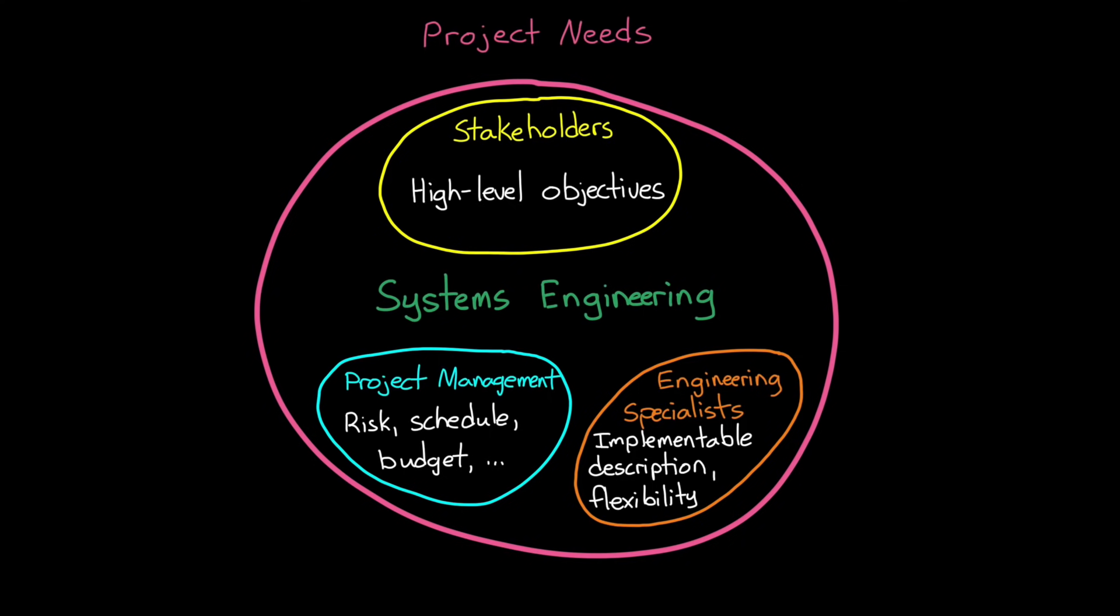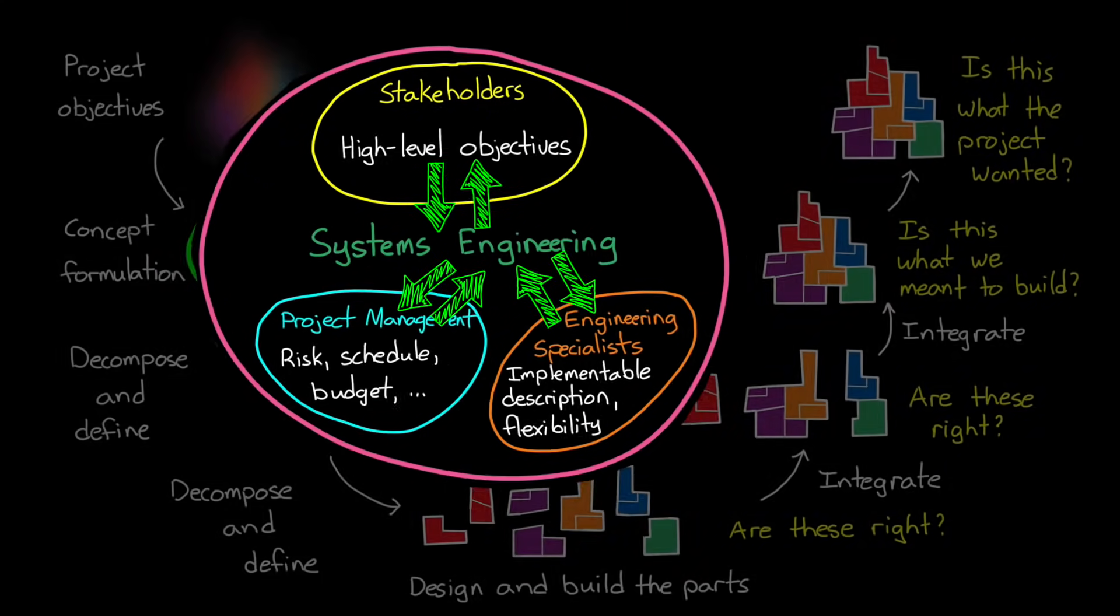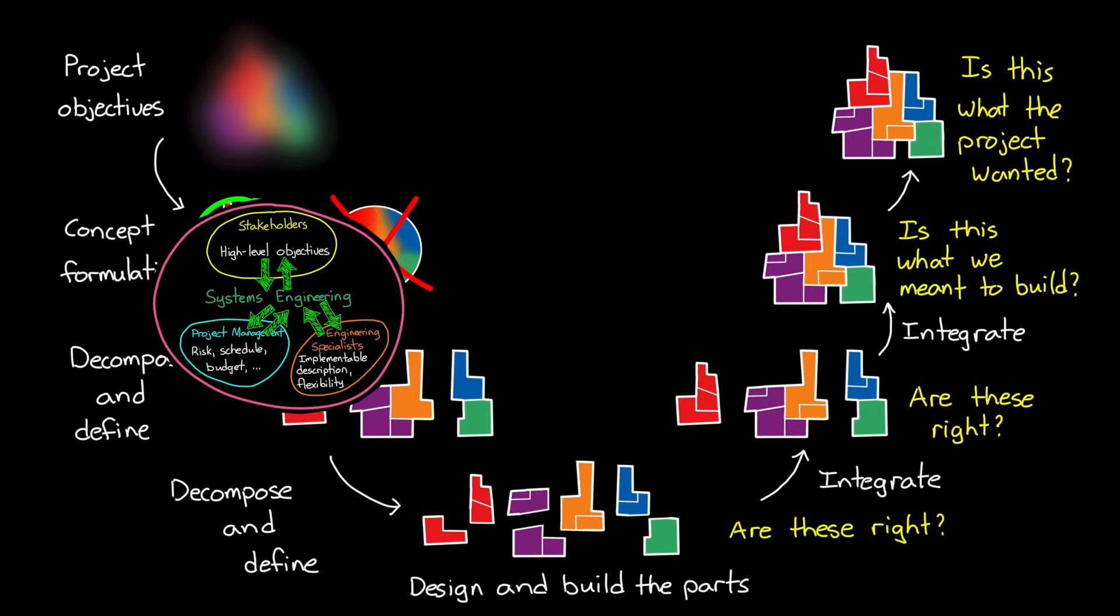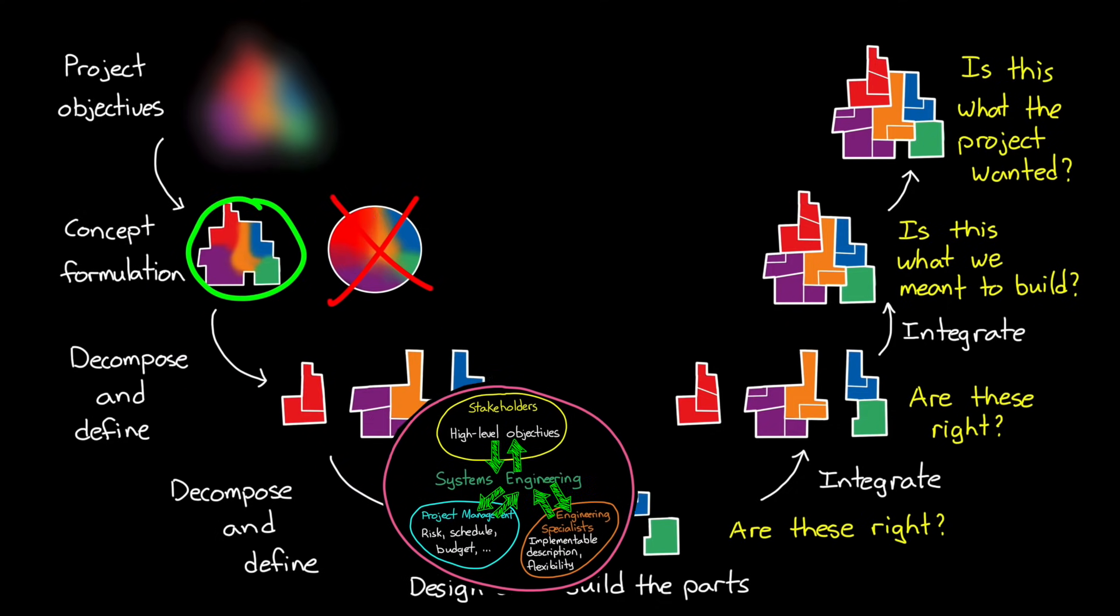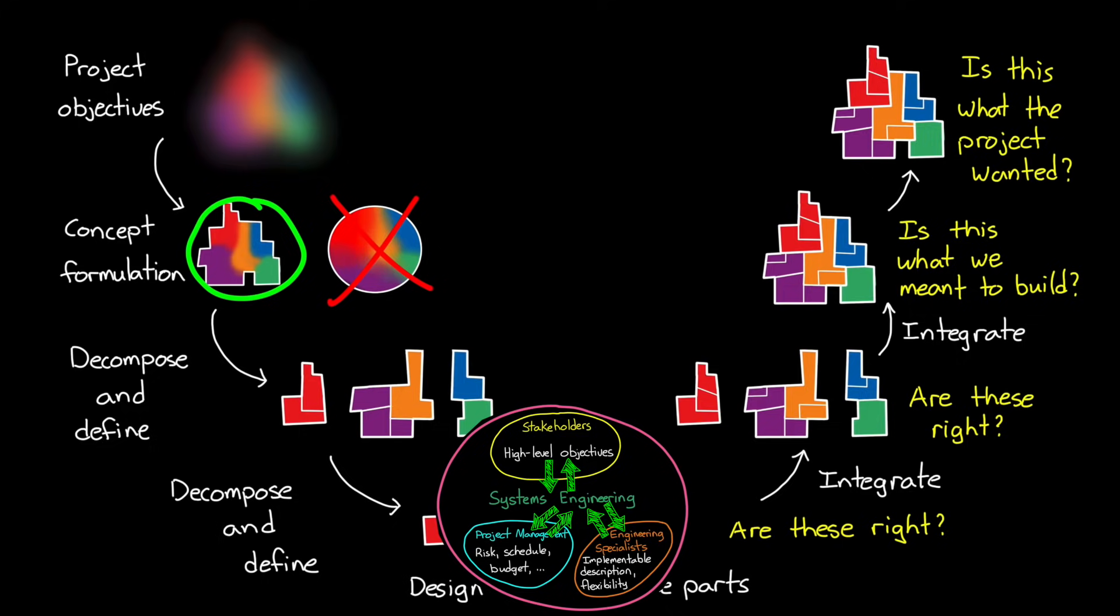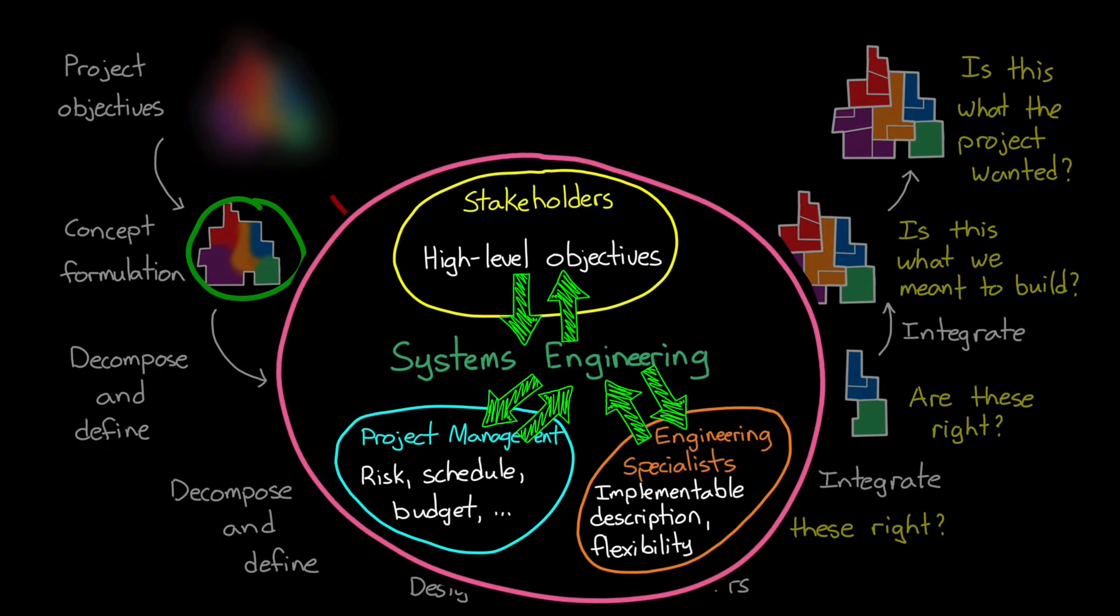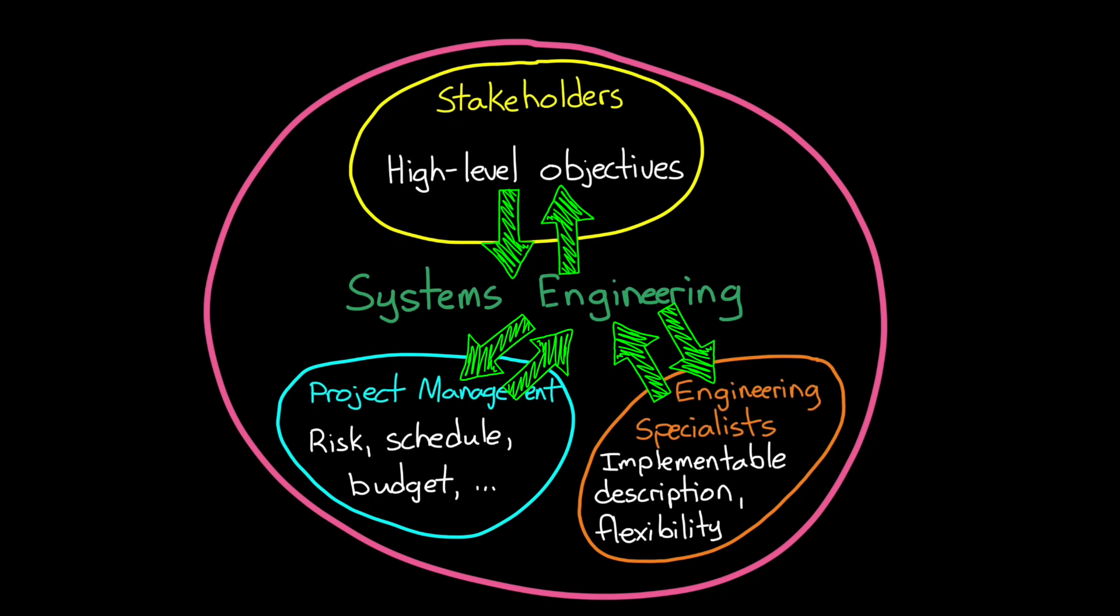Of course, the whole process is not a linear progression, where the stakeholders tell the project management what they want, the systems engineers decompose that into requirements and an architecture, and the engineering specialists then go off and build it. The process is iterative, with tight communication between all of the groups, so that they can spiral in on finer details as the project progresses through definition and design. Which is critical, because often you'll find that the needs of the different groups are in conflict with each other, and only through trade studies and architecture descriptions and requirements will you figure that out and be able to work through it.